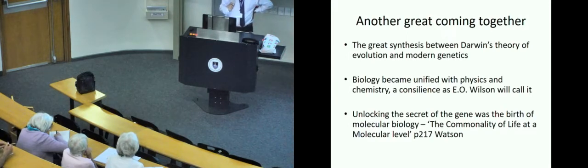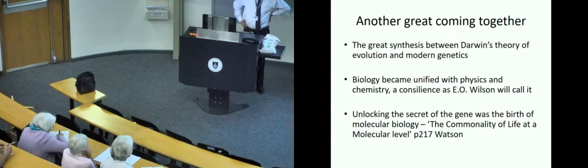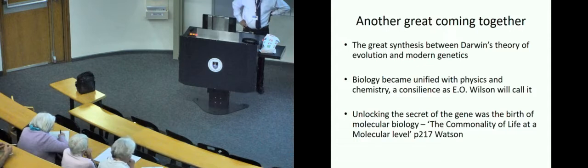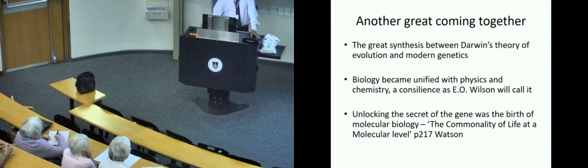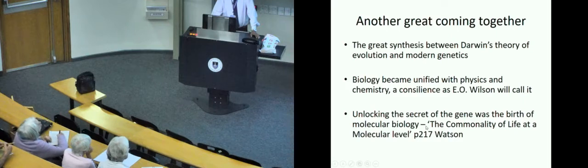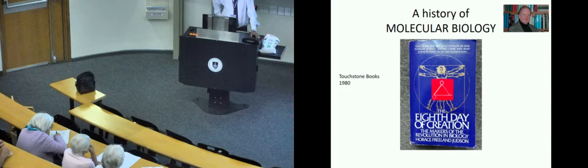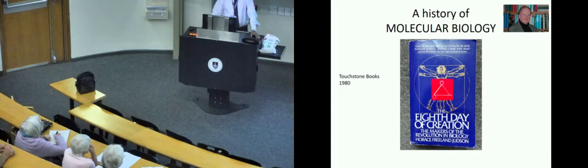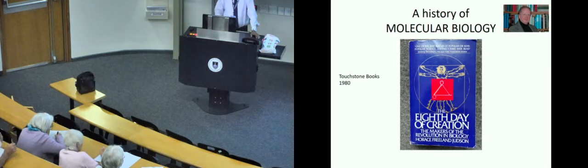There's another great synthesis that took place in the 20th century—between Darwin's theory of evolution and modern genetics. Charles Darwin wrote the Origins in 1859. He didn't know what the unit of heredity was. He talked about variation, but he didn't know what a gene was. That's surprising because not far away in Austria, Gregor Mendel was doing the experiment. Biology became unified with physics and chemistry. Wilson will call that a consilience.